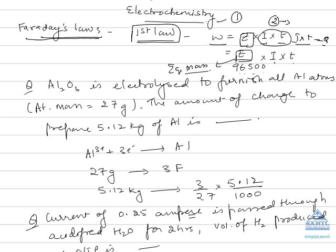Let us take an example based on this relation. Alumina Al₂O₃ is electrolyzed to furnish all the aluminum atoms. The atomic mass of aluminum is 27 grams. The amount of charge to prepare 5.12 kilograms of aluminum is calculated as follows.